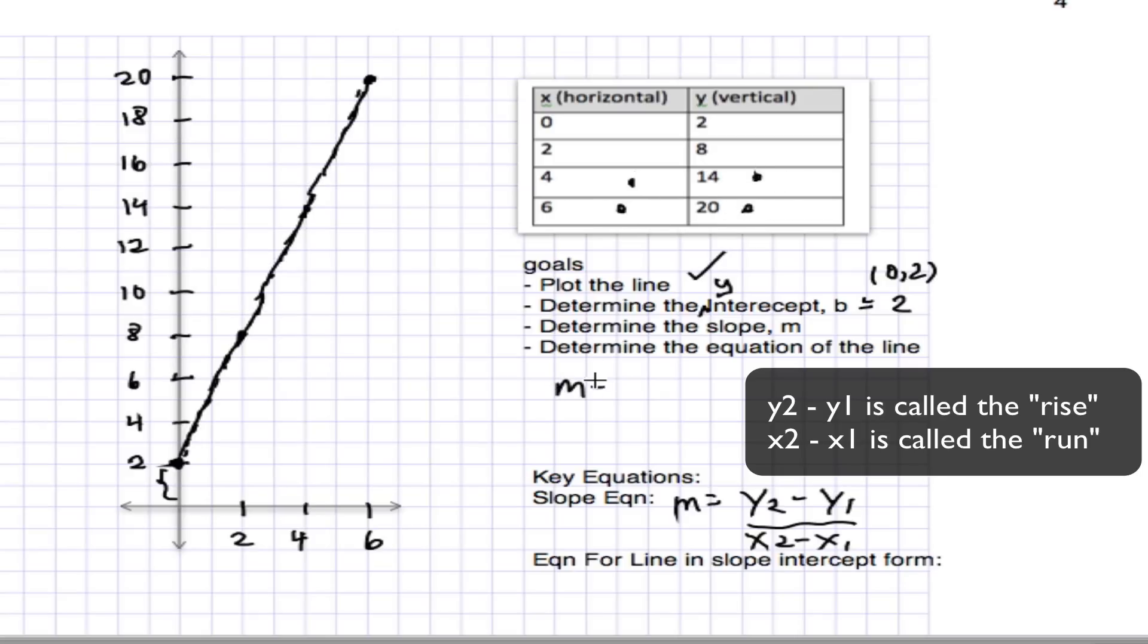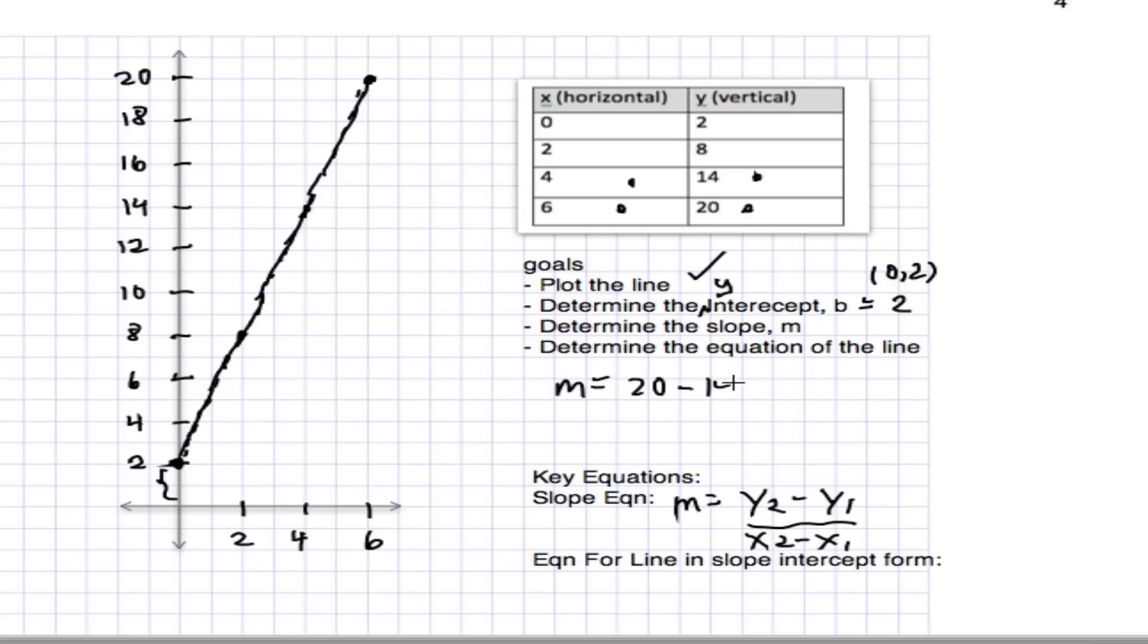And so I would take the slope as 20 minus 14 over 6 minus 4. And that's going to give me 6 over 2, which is going to end up being 3. So that's our slope, 3.